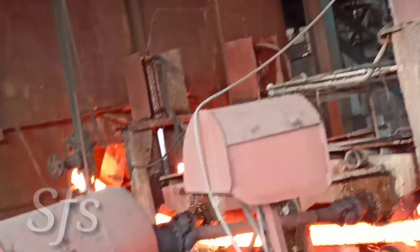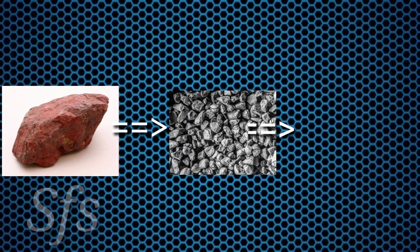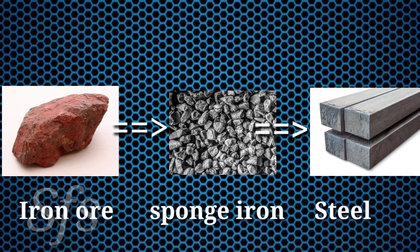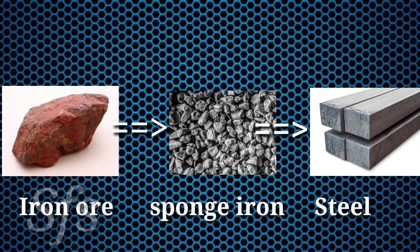This is the process of how iron ore is converted into sponge iron and then finally into steel. I hope this video is helpful to you. If it was even one percent helpful, please subscribe to the channel. There are a number of such videos on this channel. Thanks for watching — stay connected.